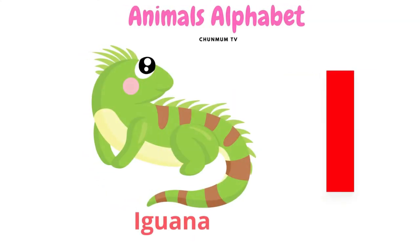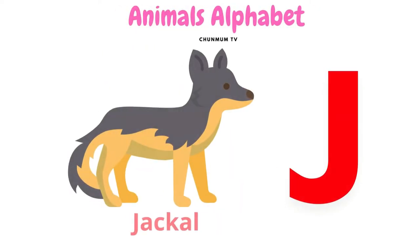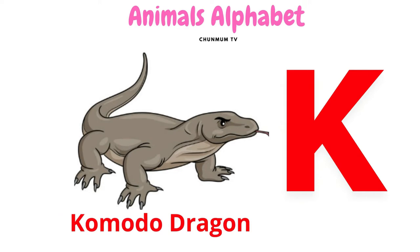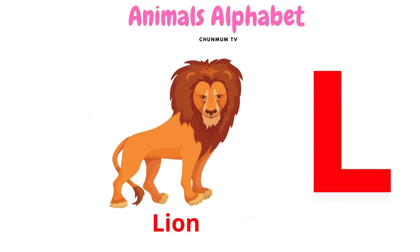I for iguana and how it sounds. J for jackal and how it sounds. K for komodo dragon and how it sounds. L for lion and how it sounds.